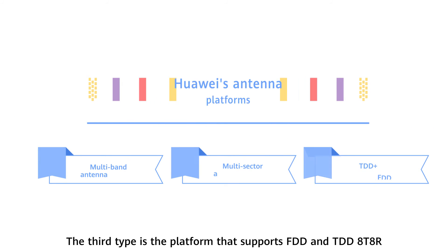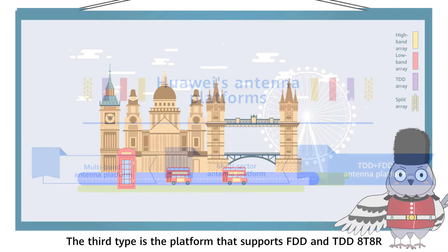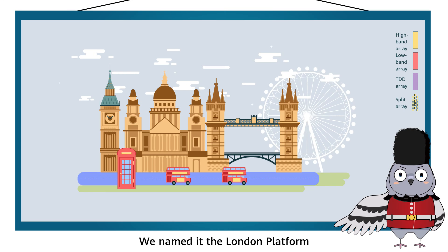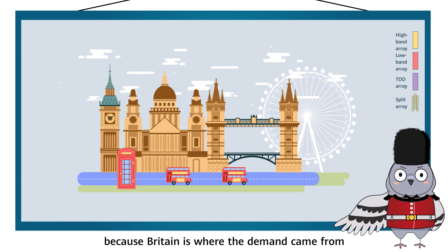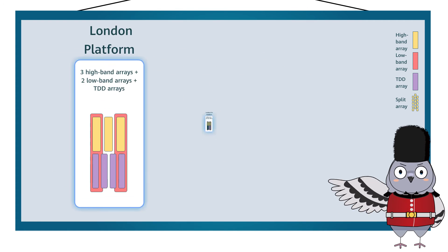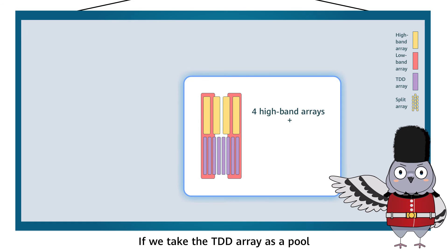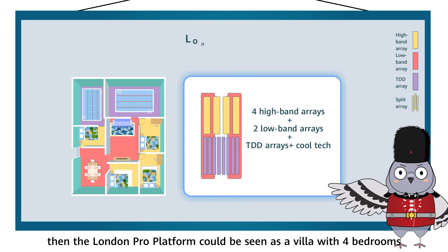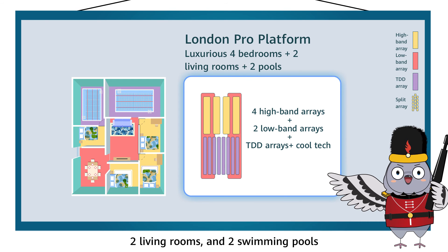The third type is the platform that supports FDD and TDD-88R. We named it the London platform because Britain is where the demand came from. If we take the TDD array as a pool, then the London Pro platform could be seen as a villa with four bedrooms, two living rooms and two swimming pools.